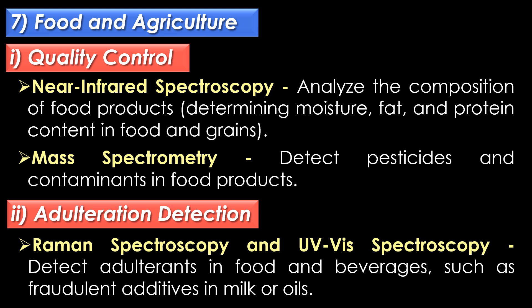Mass spectrometry is used to detect pesticides and contaminants in food products. In adulteration detection, Raman spectroscopy and UV-visible spectroscopy help to detect adulterants in food and beverages, including fraudulent additives in milk or oils.